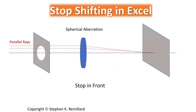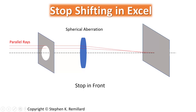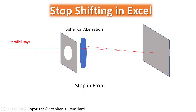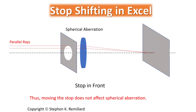Spherical aberration arises when parallel rays at different heights strike the optic axis at different places, forming the image at a slightly different axial location. If you move the aperture stop, it doesn't affect those parallel rays — they are still going to strike the optic axis where they strike it. So the aperture stop movement does not affect spherical aberration.